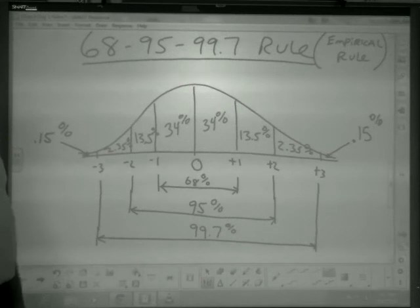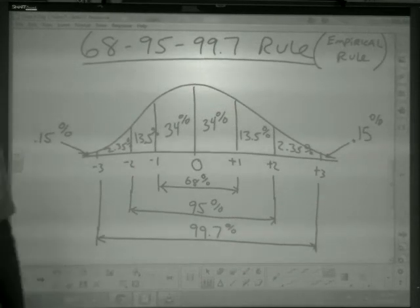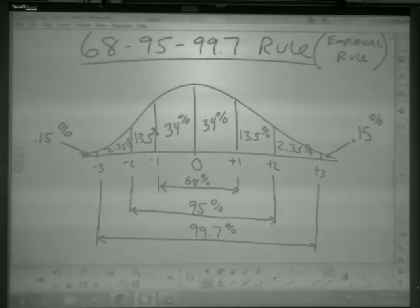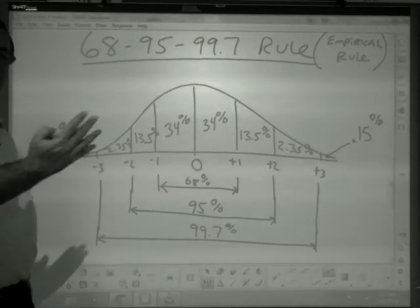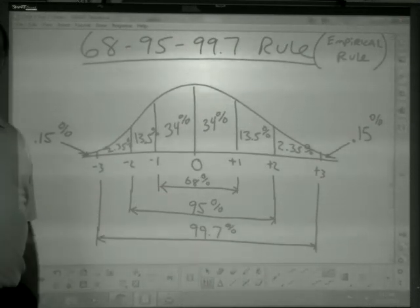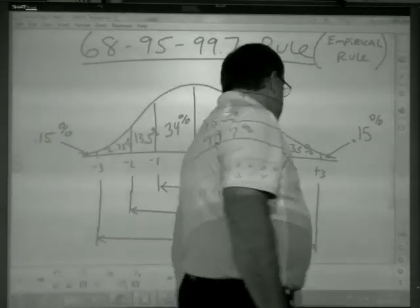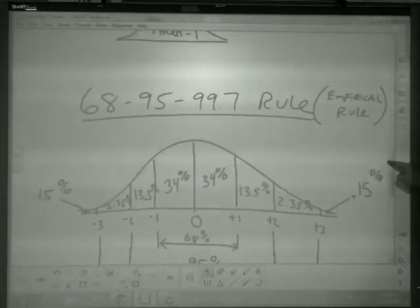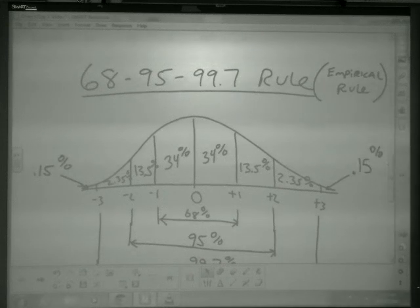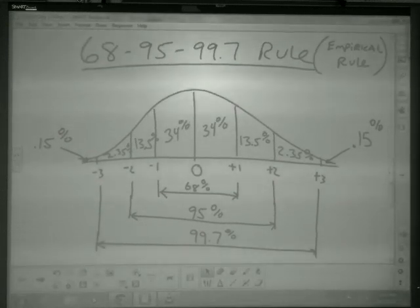So in class we're going to use our class height data and we will answer some questions about that. But that's it, that's the empirical rule, or what we call the 68-95-99.7 rule for the way data should behave. Okay.